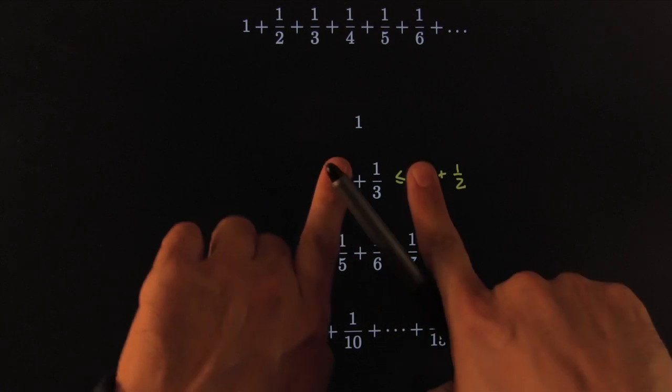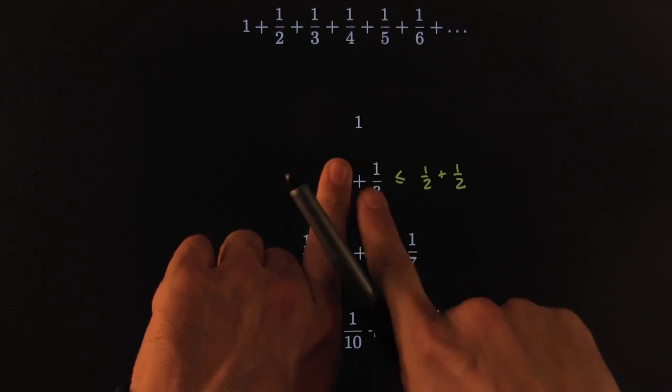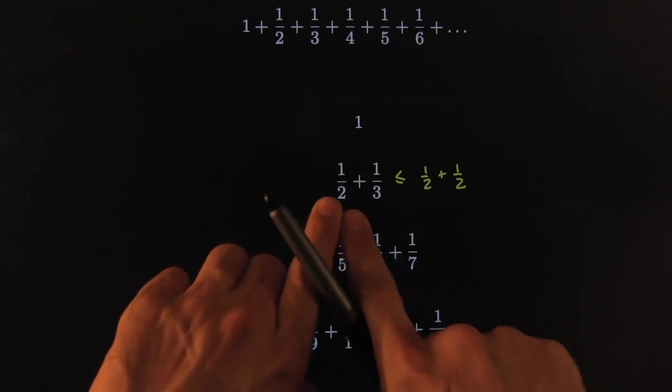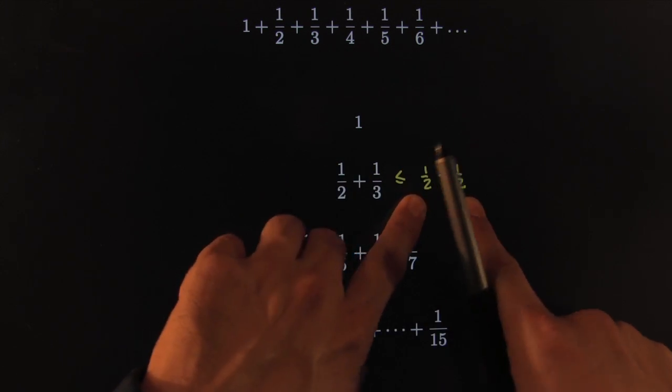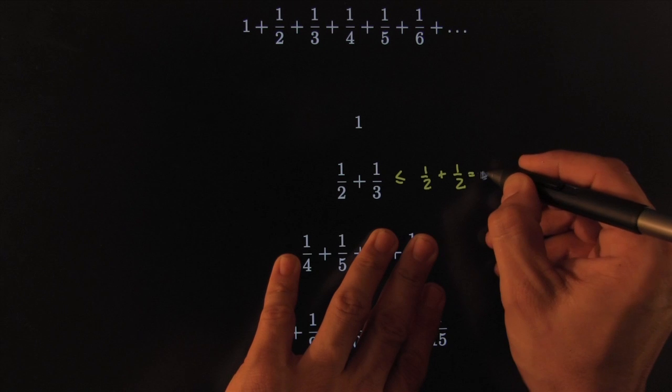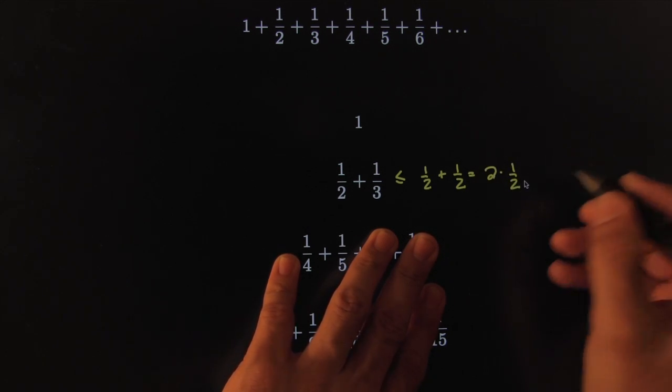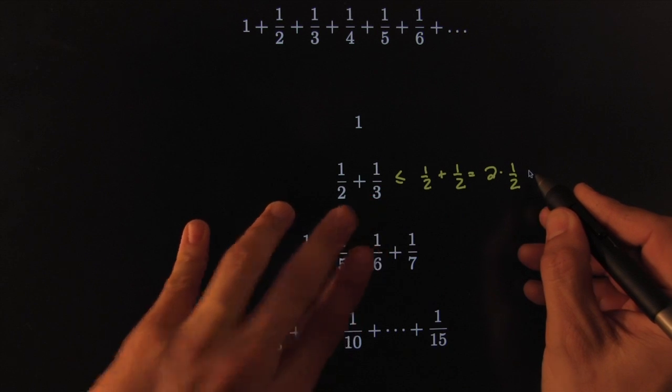This one is obviously less than or equal to 1 half plus 1 half. The 1 half is the same as 1 half. The only question is, is 1 third smaller than 1 half? Because the bottom is bigger, yes, it is. So 1 half plus 1 third would be smaller than 1 half plus 1 half. That means we can rewrite it as 2 times 1 half.